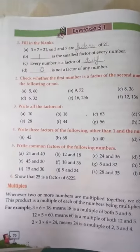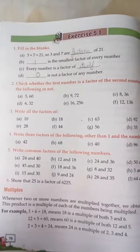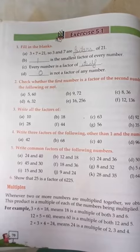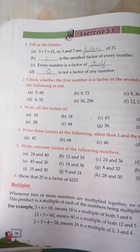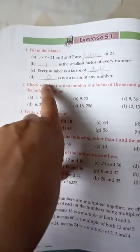Whether the number is smaller or greater, every number is a factor of itself. Every number is a factor of itself. Zero is not the factor of any number. Okay, zero is not a factor of any number, understood?